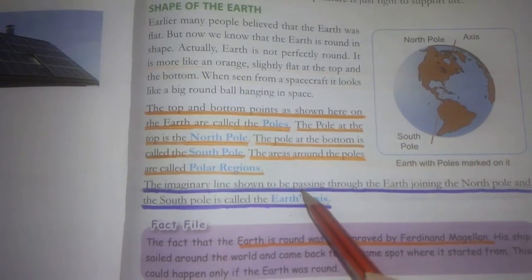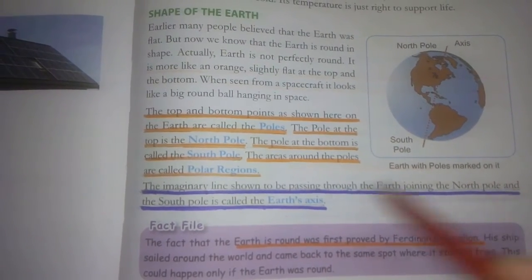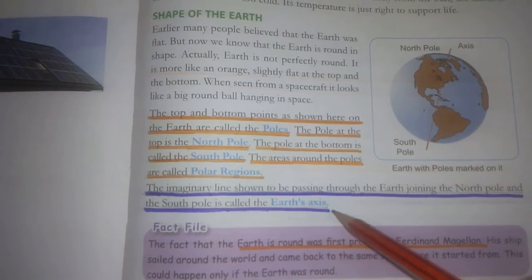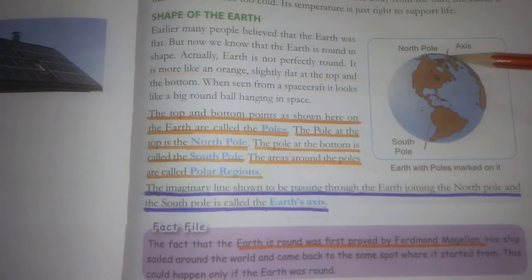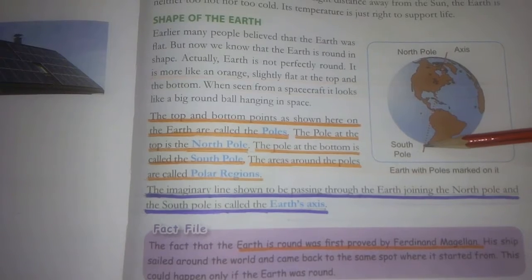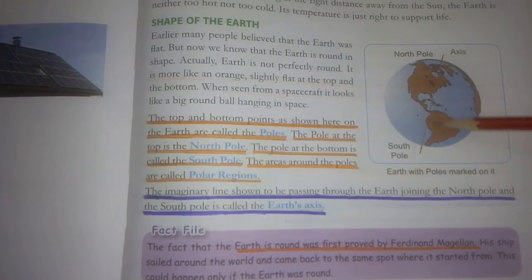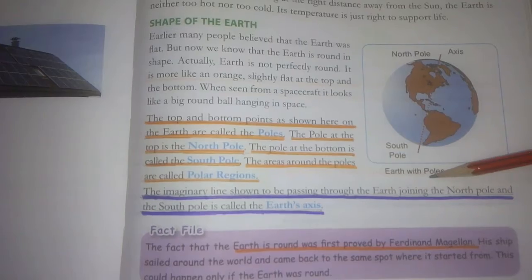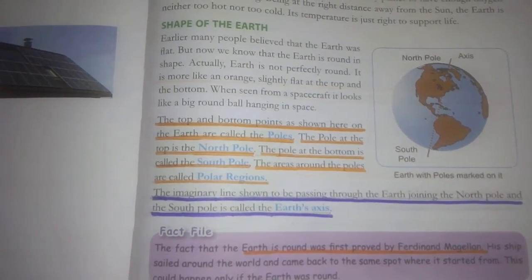The imaginary line shown to be passing through the earth joining the north pole and south pole is called earth's axis. This imaginary line that you can see connecting the north and south poles is called the earth's axis.